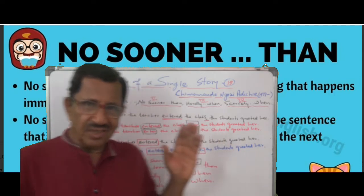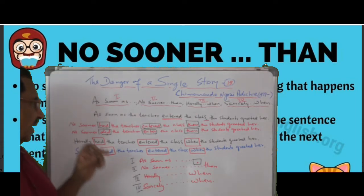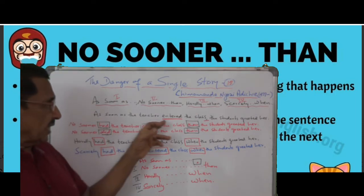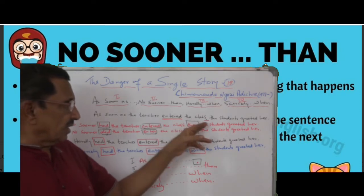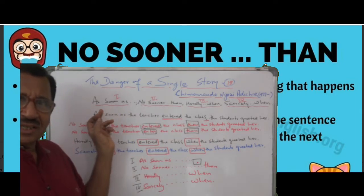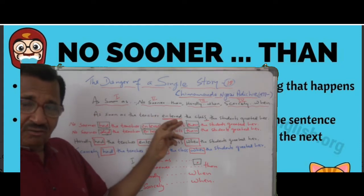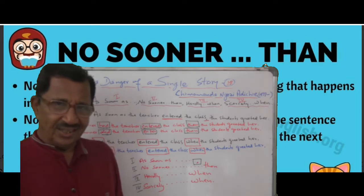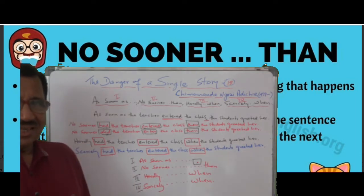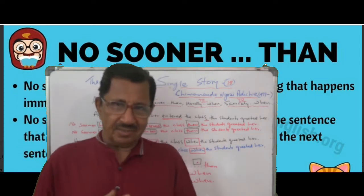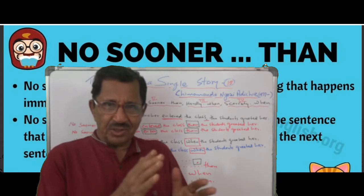Now see what I have written. Go through this example: 'As soon as the teacher ended' — past tense, simple past — 'ended the class.' So you begin the sentence with 'as soon as,' put a comma at the end of that clause, then continue: 'the students greeted her.' Now the question is: there are two actions in the past. Which one takes place first? The 'as soon as' action takes place first.